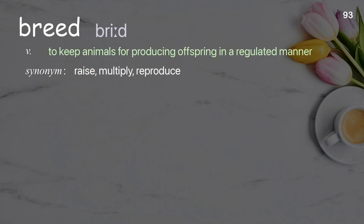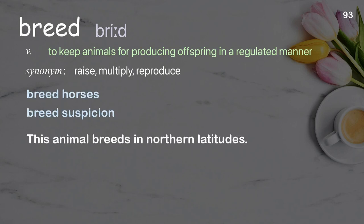Breed: to keep animals for producing offspring in a regulated manner. Examples: breed horses, breed suspicion. This animal breeds in northern latitudes.